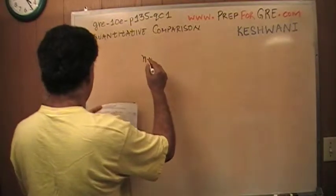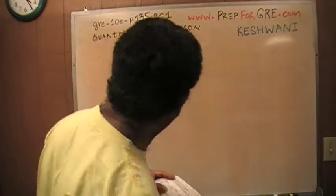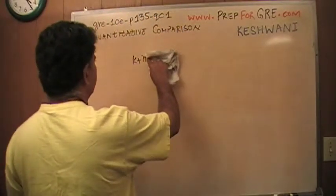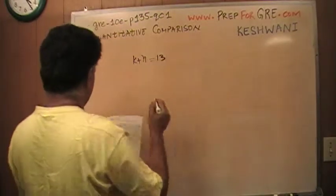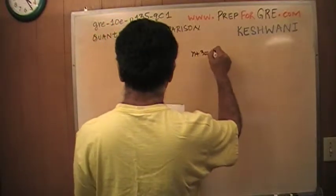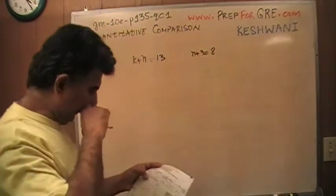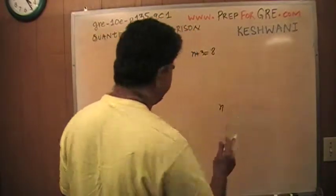N plus, rather K plus N, we are told (not that it makes any difference), is 13. And we're also told that N plus 3 is 8. And the question is simply, which one is bigger, K or N? Well, let's see.